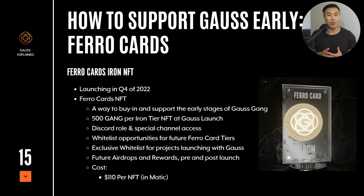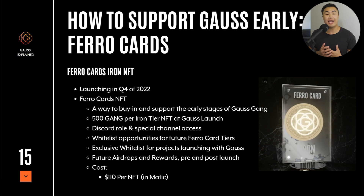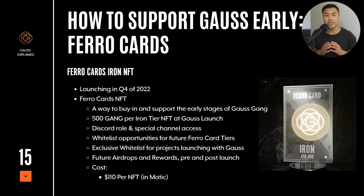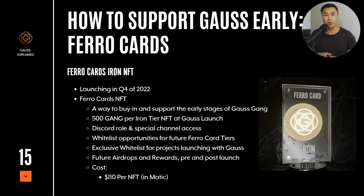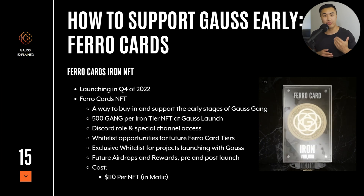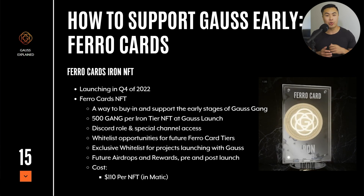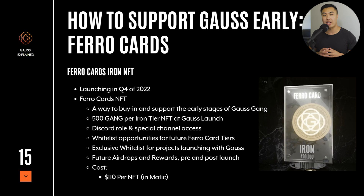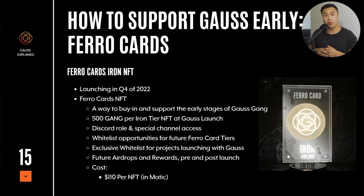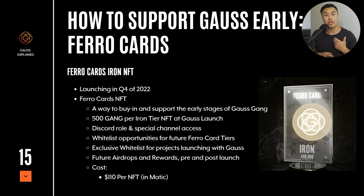So how do you actually get in early or support the ecosystem? Well, currently something called the Feral Cards NFT has been launched, and it is a way to buy in and support the early stages of Goss. This isn't just a regular NFT you're buying and holding for no reason — there are a lot of benefits for people holding these NFTs as early supporters. By holding a Feral Card NFT, you can actually get 500 GANG tokens at the Goss launch. This is for the Iron Tier NFTs, and there are going to be other types of NFTs down the line. There are also whitelist opportunities for future NFTs and exclusive whitelists to different projects launching in the Goss ecosystem.